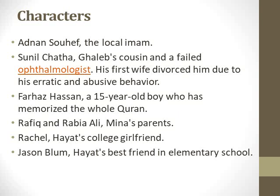Sunil's first wife divorced him due to his erratic and abusive behavior. Faraz Hassan is a 15-year-old boy who has memorized the whole Quran. Rafiq and Rabia Ali are Mina's parents. Rachel is Hayat's college girlfriend. Jason Blum is Hayat's best friend in elementary school.